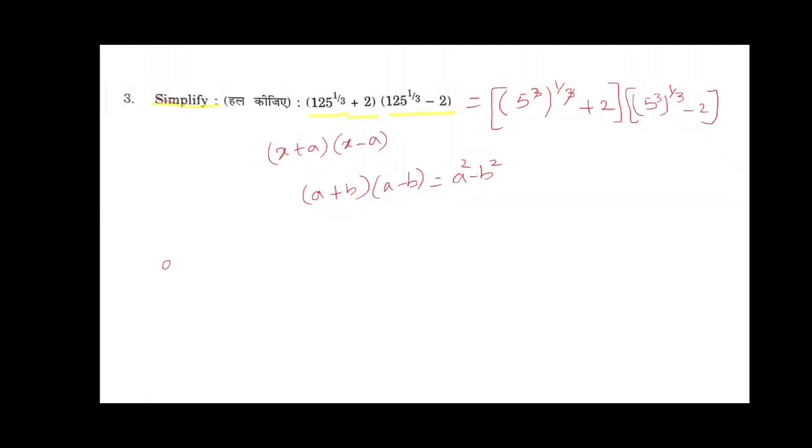So 3 and 3 cancelled. Again 3 and 3 cancelled. 5 plus 2 into 5 minus 2. So the answer is 7 into 3 equals 21.